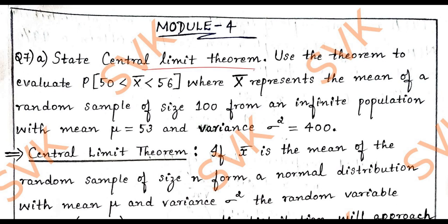Use this theorem to evaluate the probability of 50 less than x̄ less than 56, where x̄ represents mean of a random sample of size 100 from an infinite population with mean μ = 53 and variance σ² = 400.